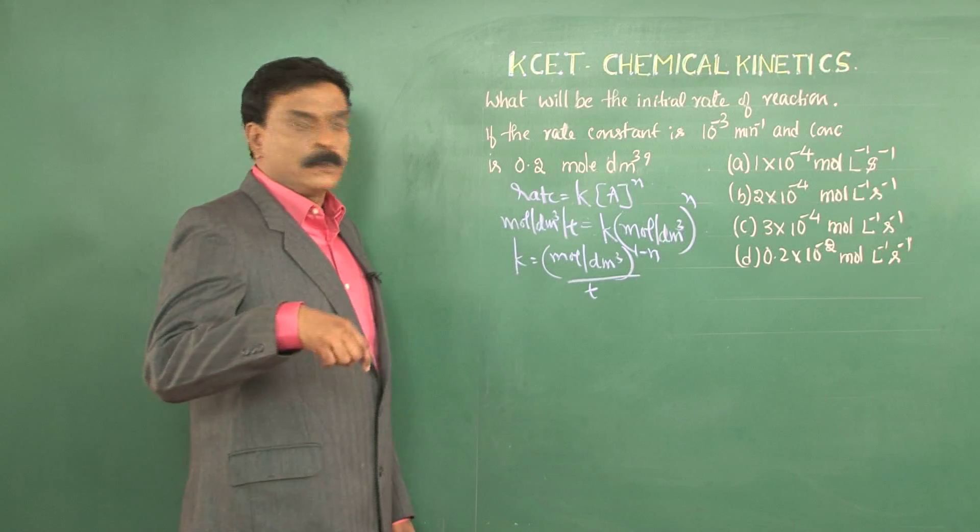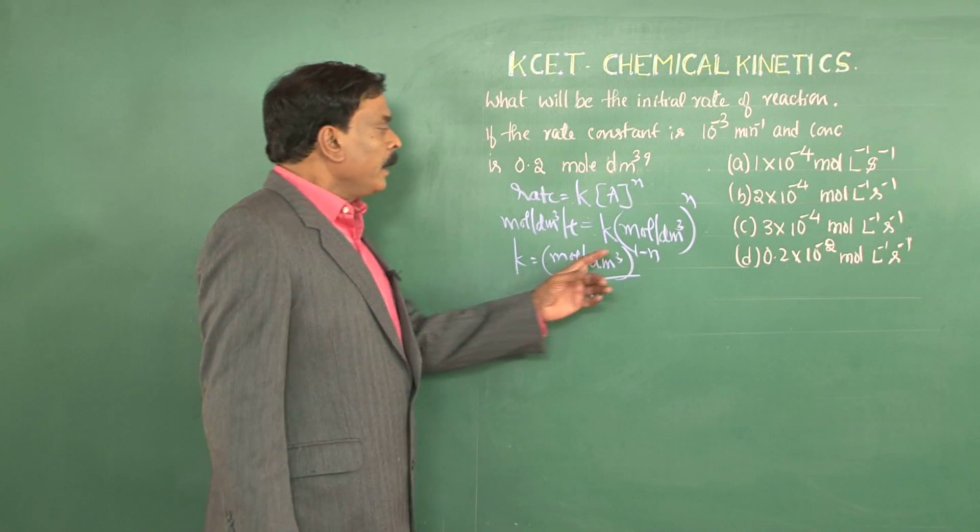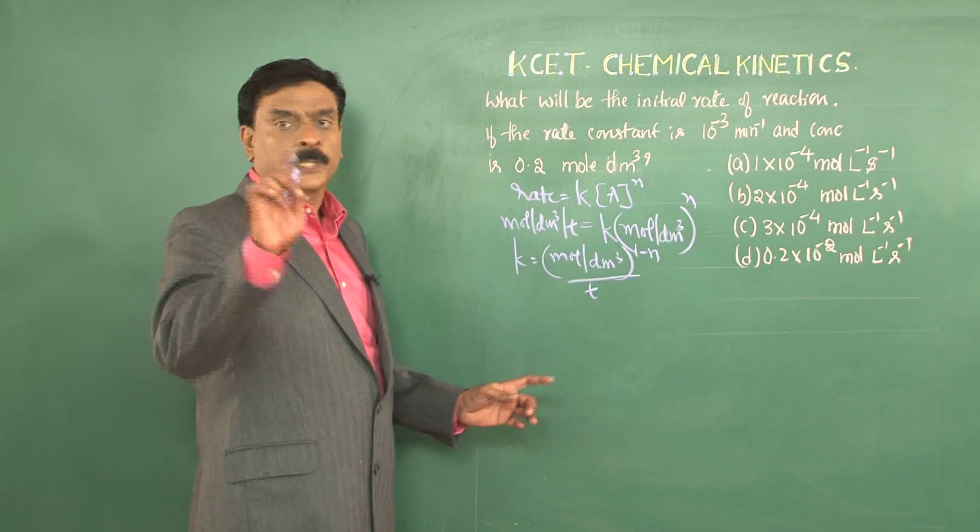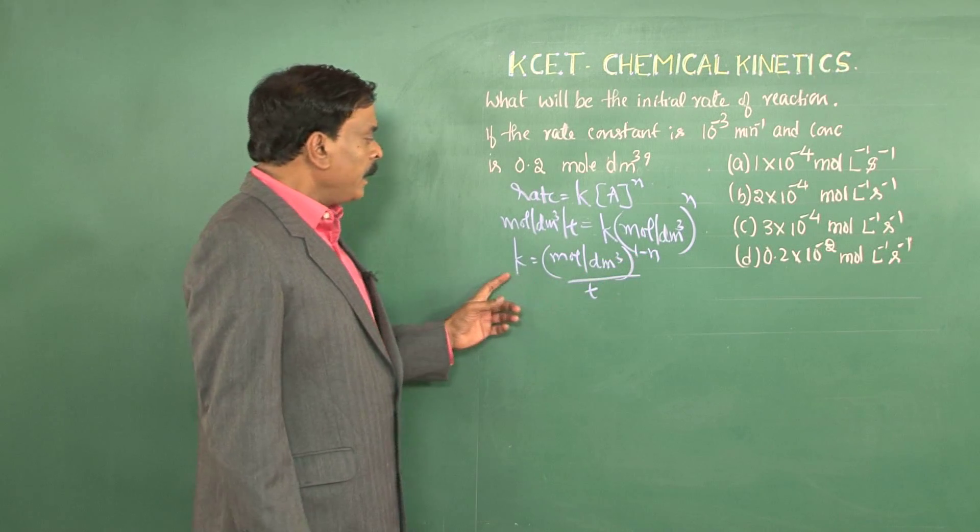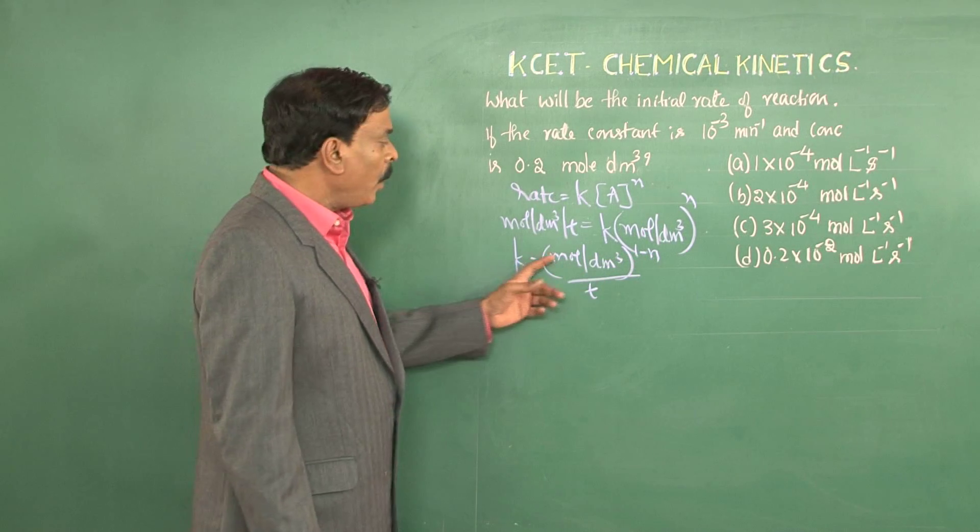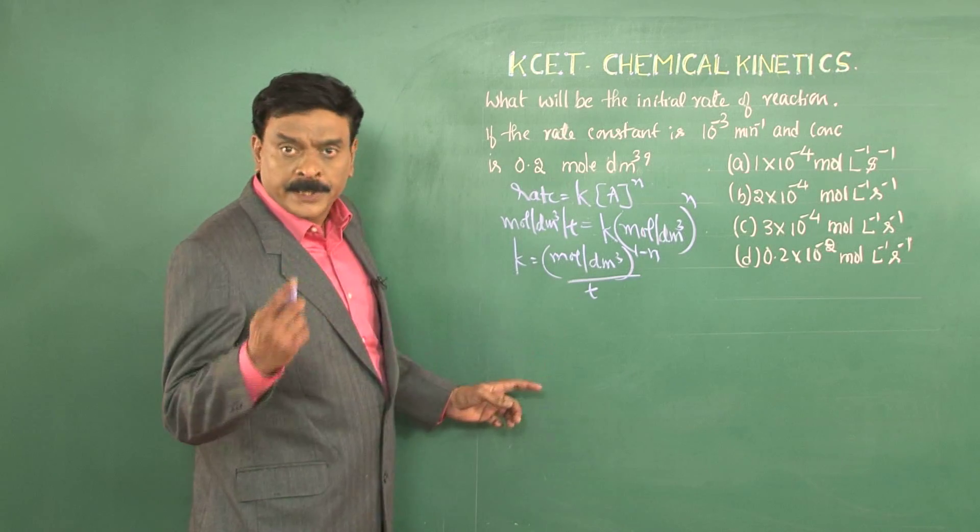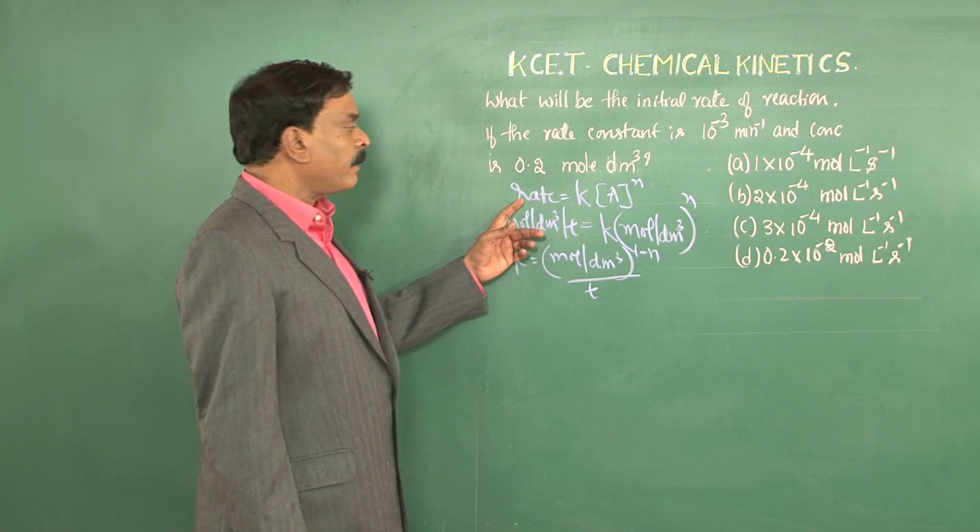Now, coming to the zero order reaction, n value is 0 and when n value is 0, the unit of k will be mol per dm cube per time, which is the same as that of the rate of the reaction.